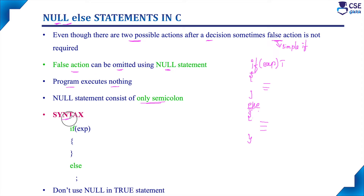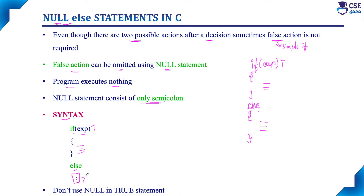The syntax for the NULL ELSE statement is: IF expression, and if the condition is true, we specify any number of statements — either a simple statement or a compound statement. In the ELSE part, we just specify a semicolon. This is the NULL ELSE statement. We use it instead of a simple IF statement because the general practice is to use the IF-ELSE structure, and when the ELSE part is not required, we specify it as a NULL statement so the program executes nothing.